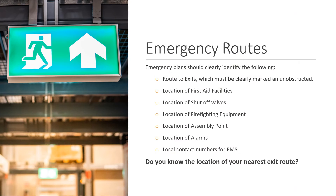If the decision is to evacuate the premises, then you need clearly defined emergency routes. Your emergency plan should clearly identify the following: the route to the exit, which must always be clearly marked and unobstructed; the location of first aid facilities; the location of any shuttle valves, for gas for instance; the location of firefighting equipment; the location of the assembly point, the alarms, as well as the local contact numbers for emergency services.